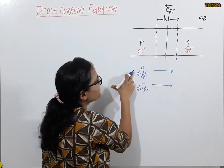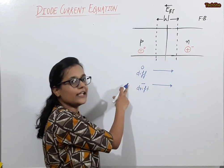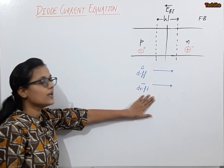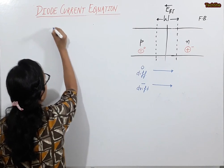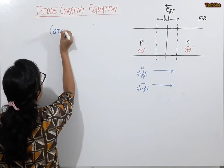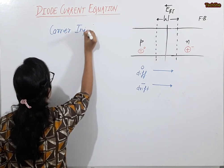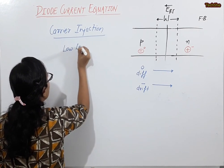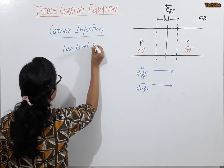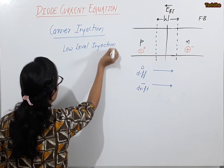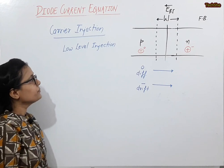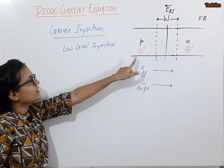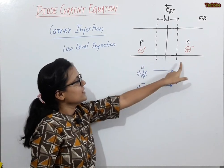Now let's consider the N-side. The holes inside are minority carriers being injected, and the electrons are the majority carriers. Here we will consider the phenomenon of carrier injection under low-level injection conditions, where the concentration of injected carriers is low.